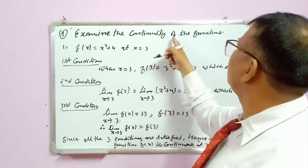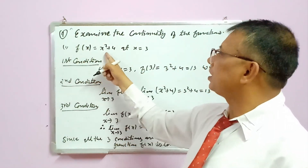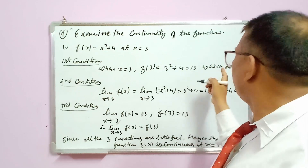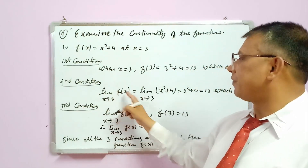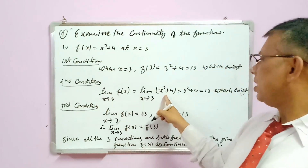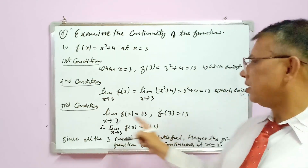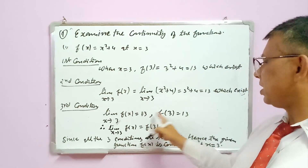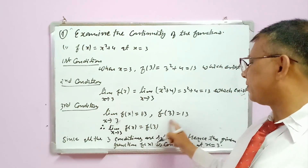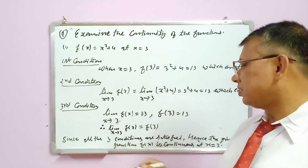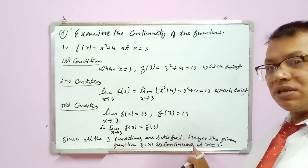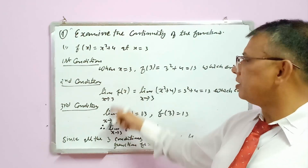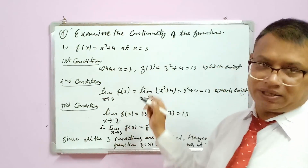Now we'll start with continuity problems. First question: f(x) = x² + 4 at x = 3. First condition: f(3) = 3² + 4 = 9 + 4 = 13, which exists. Second condition: limit as x tends to 3 of f(x) = 3² + 4 = 13, which exists. Third condition: the limit equals f(3) = 13. Since all three conditions are satisfied, f(x) is continuous at x = 3.